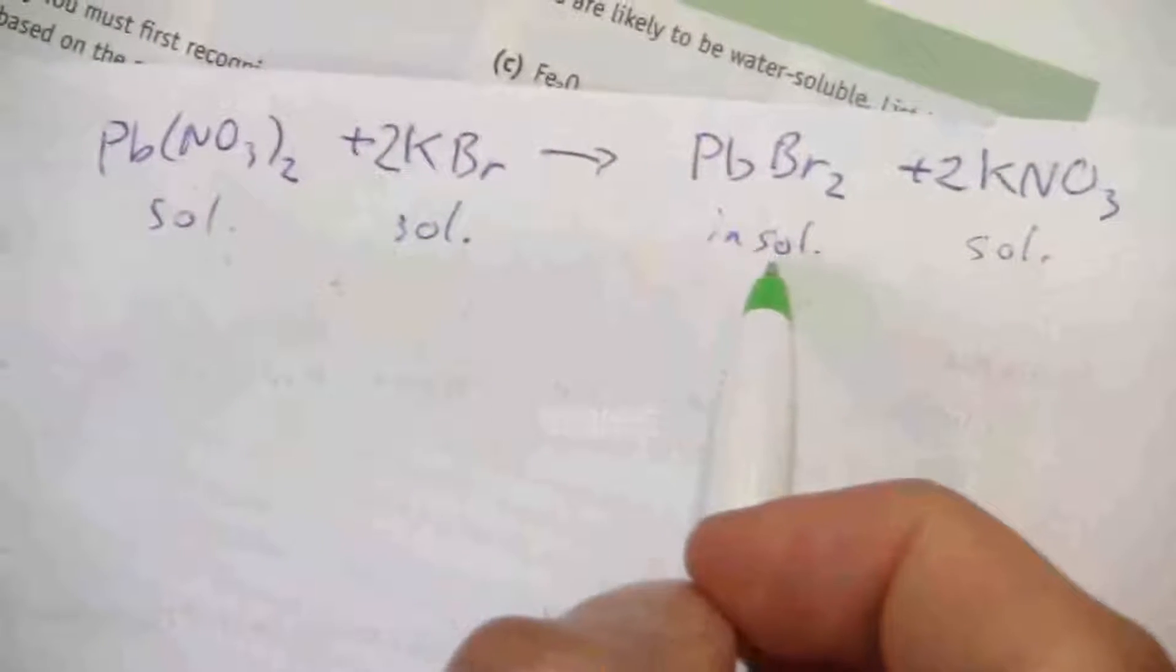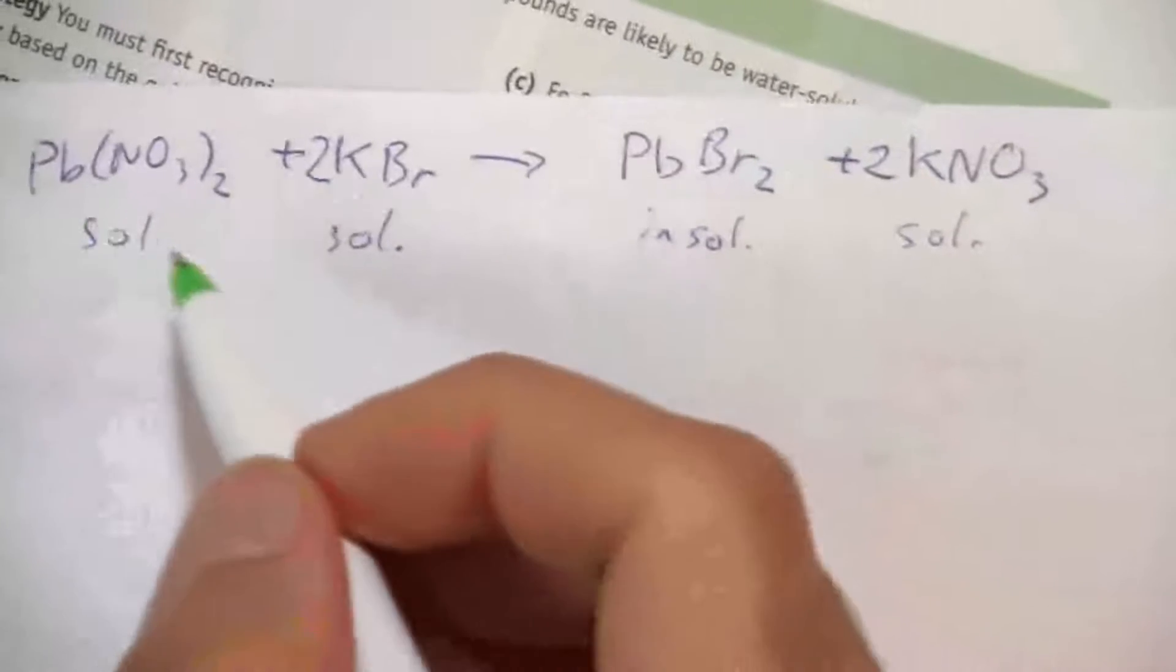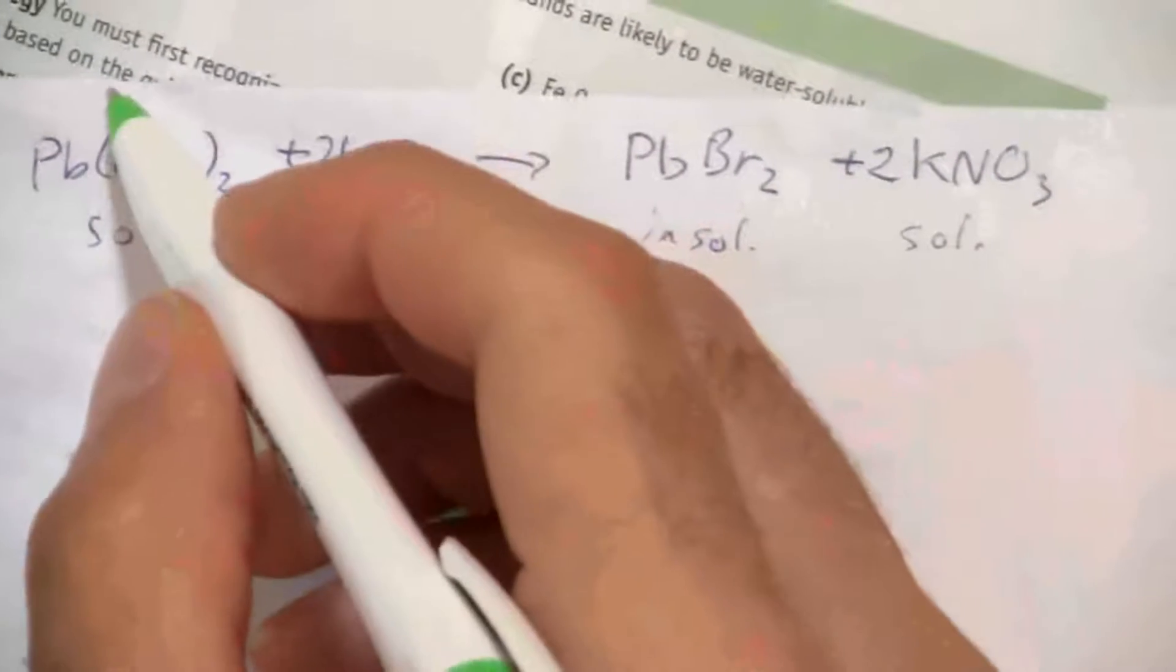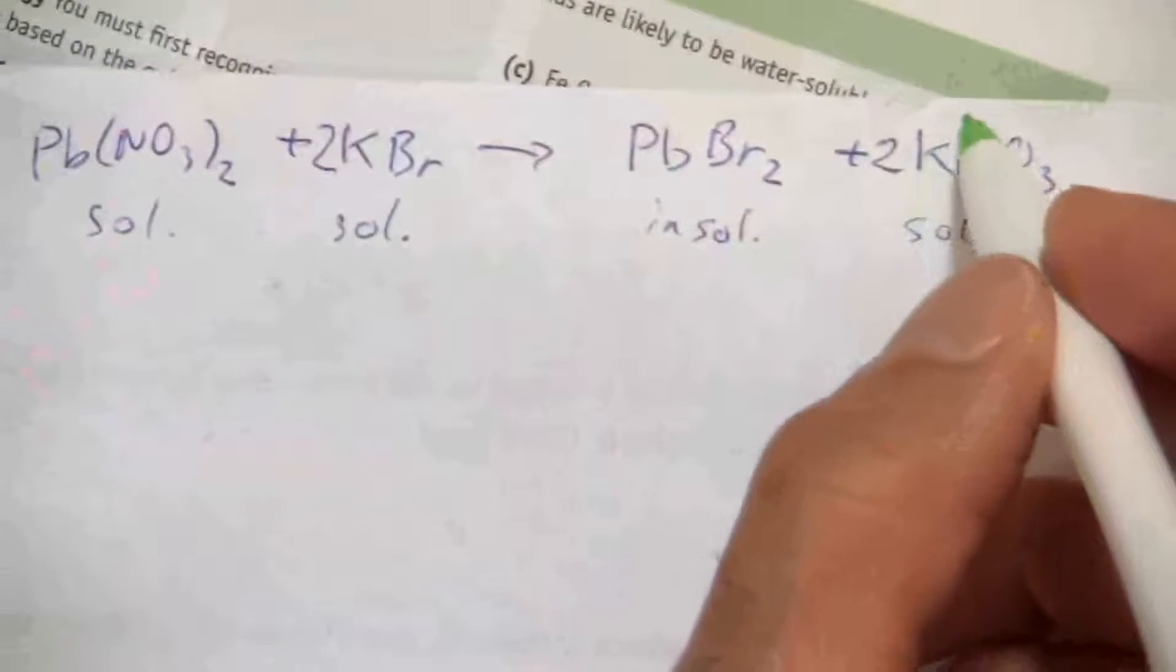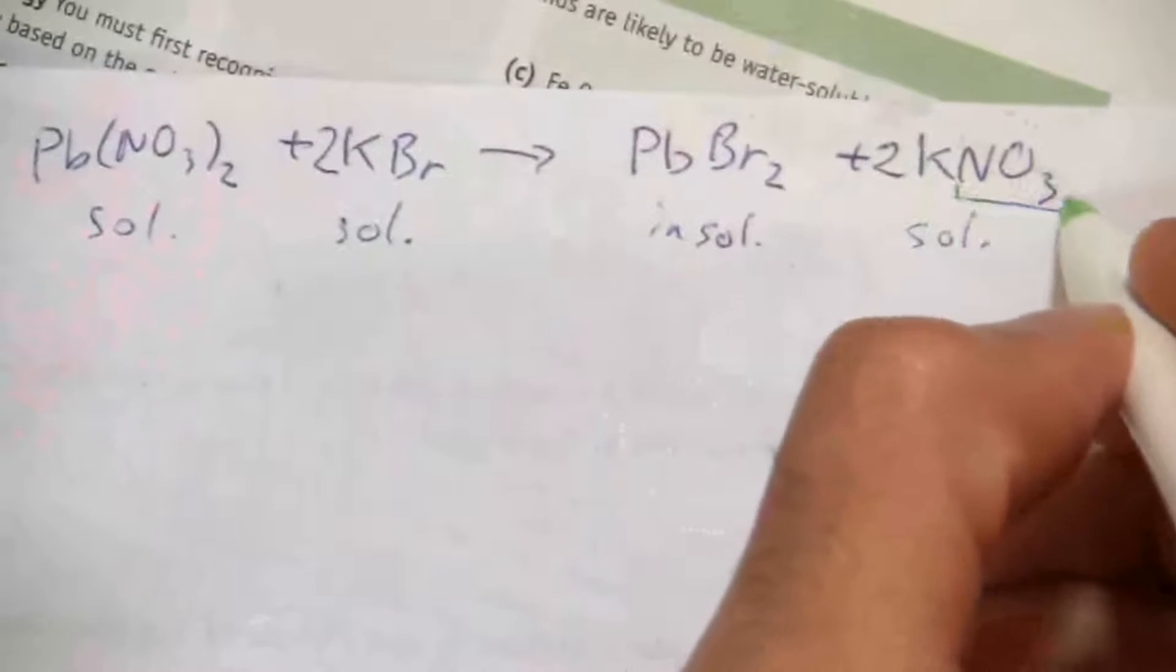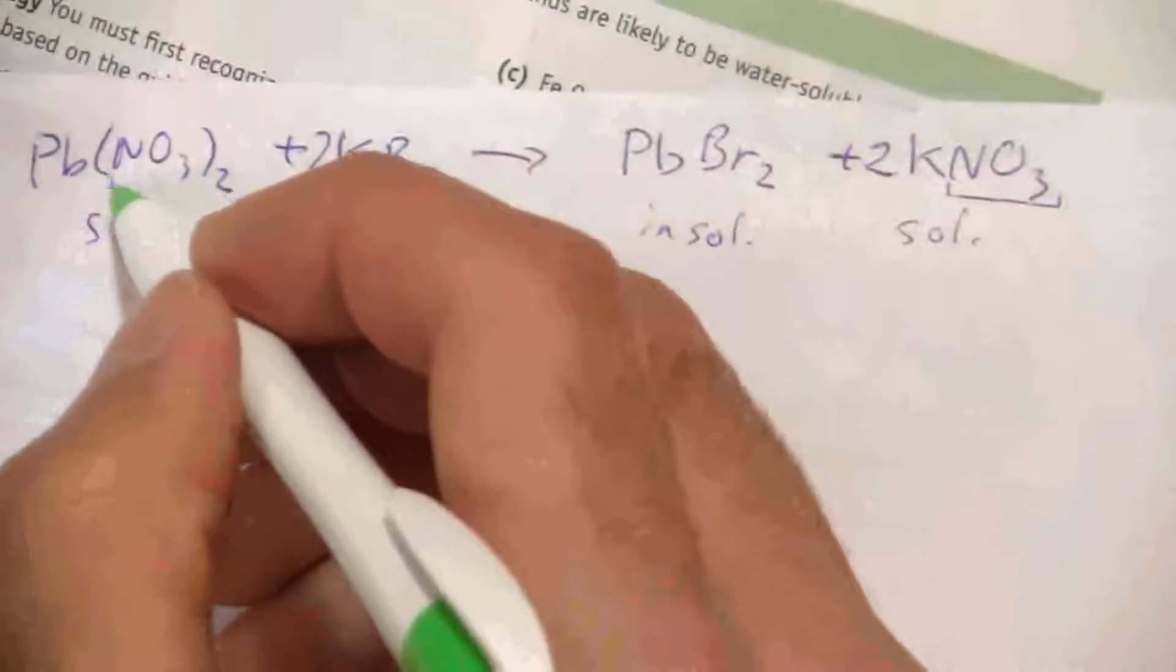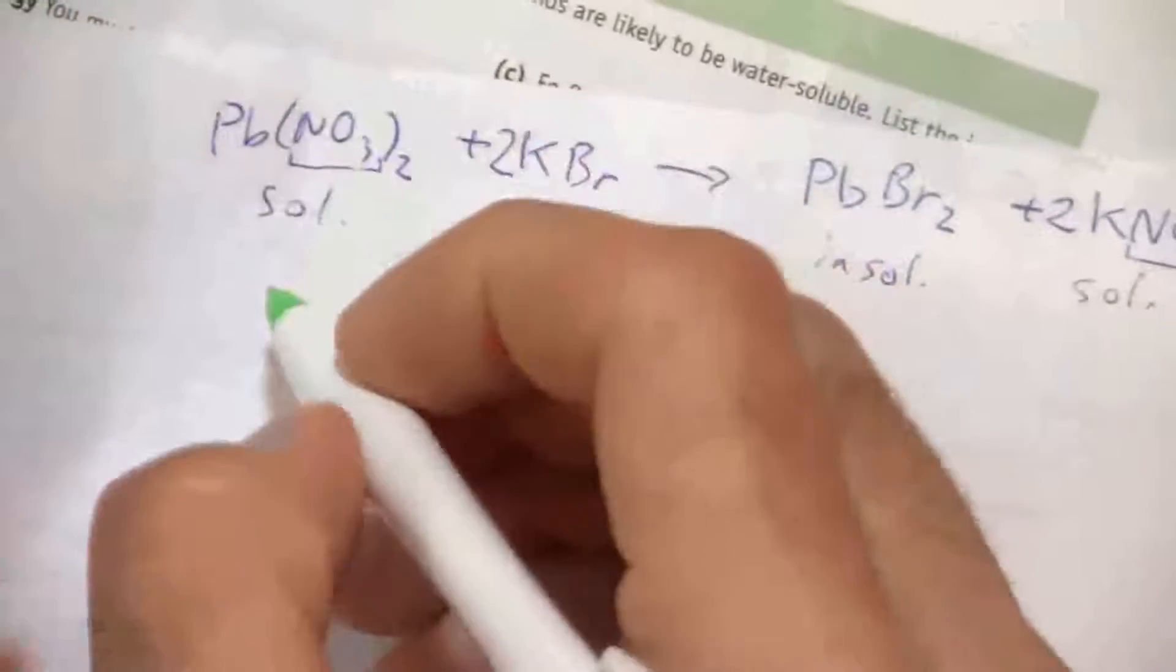So now we know the soluble compounds and the insoluble compound. So when we're doing our net ionic equation, we're going to break apart the soluble ones into their constituent ions. And you know how to break these apart because you never mess with the polyatomic ions. The polyatomic ions remain as a unit.